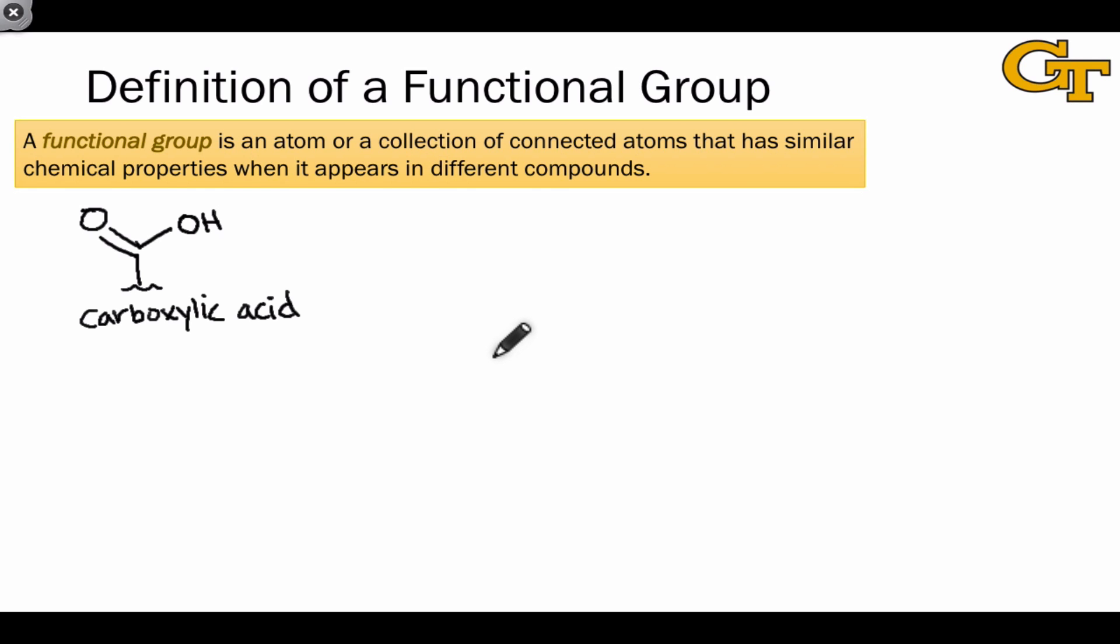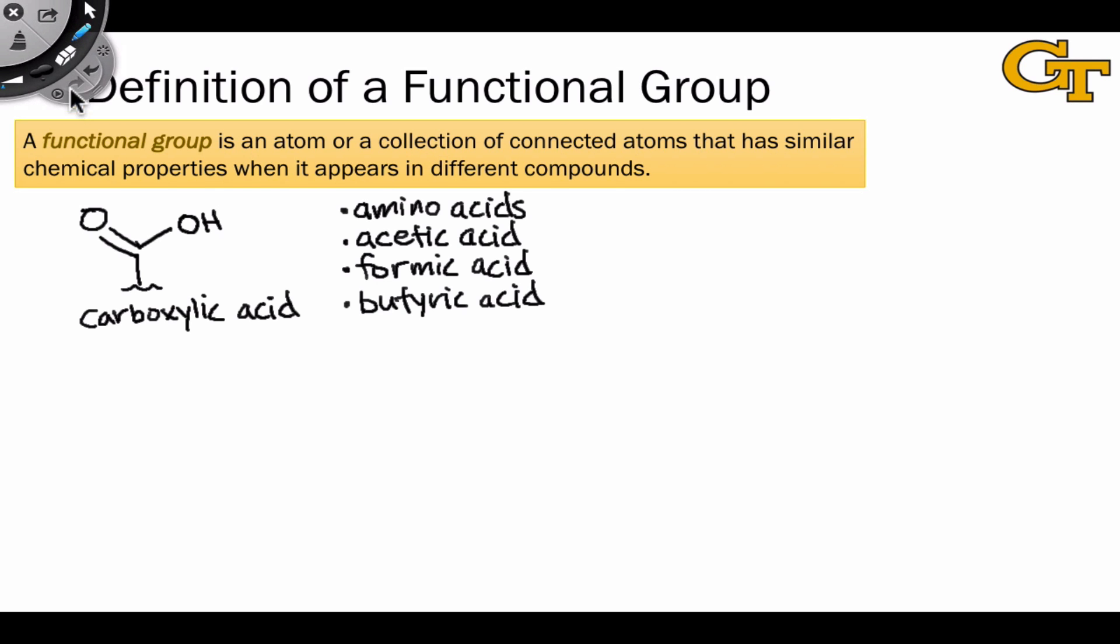Carboxylic acids show up in a variety of structures. And in all of these molecules, the portion of the molecule that is the carboxylic acid functional group displays similar properties. The first is its reactivity. And this might be obvious from the name of the functional group and the name of all of these molecules in which it appears: acids, acid, acid, and acid. The acidic nature of all of these molecules can be traced to the carboxylic acid functional group, specifically the acidic proton within this functional group.